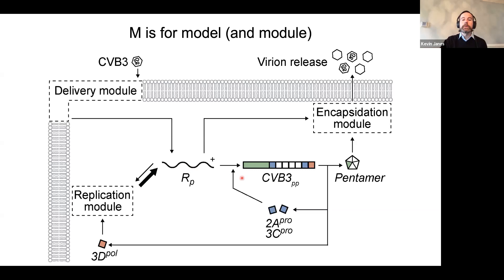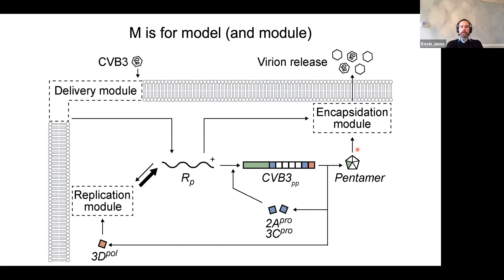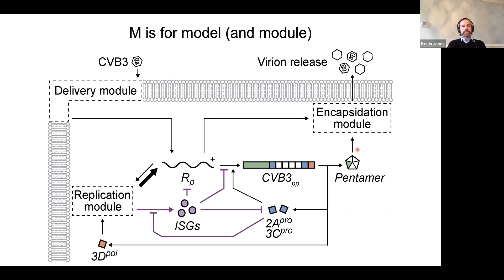Step one: the virus docks on membrane receptors, is internalized, and the positive-strand RNA genome is delivered to the cytoplasm. The delivered positive-strand RNA is used as a template for translation using host cell ribosomes, and that single polyprotein is autocatalytically cleaved into mature protein subunits. The RNA-dependent RNA polymerase synthesizes a negative strand complementary to the positive strand, then uses this negative strand as template to make many copies of the positive strand for more translation and eventual virion formation.